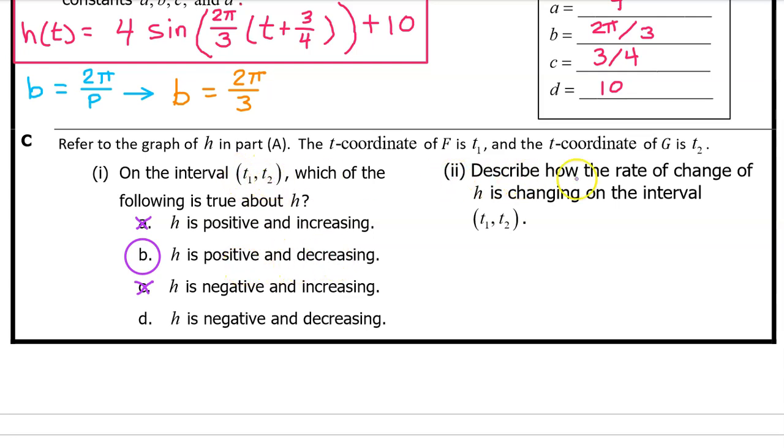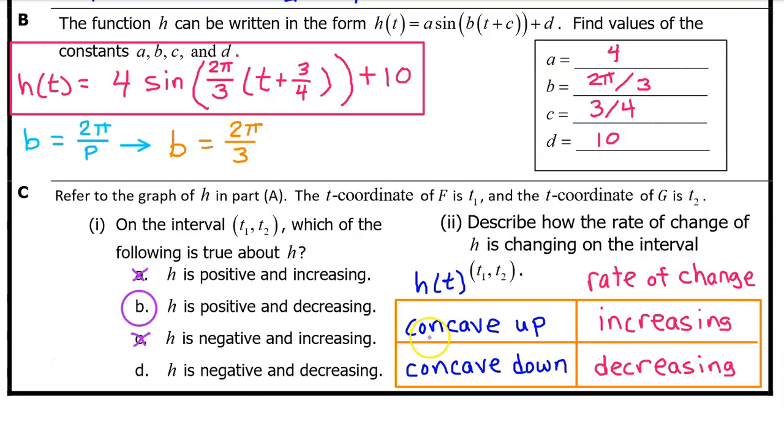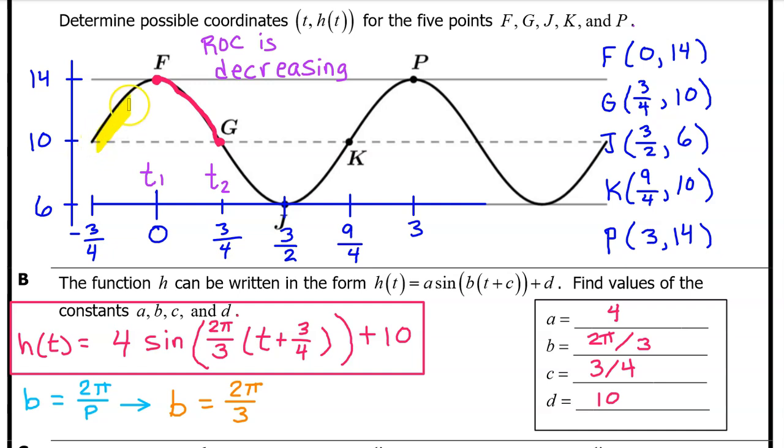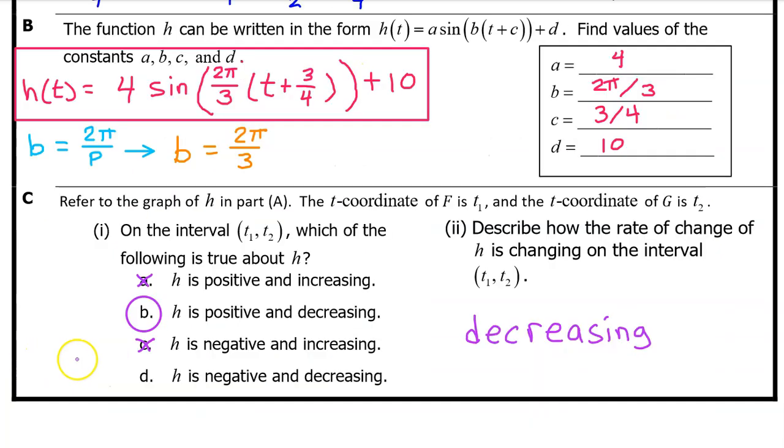See part 2. Describe how the rate of change of h is changing on the interval from t1 to t2. In unit 1, we learned that wherever h of t is concave up, the rate of change is increasing. And wherever h of t is concave down, the rate of change is decreasing. On the interval from t1 to t2, h of t is concave down. Therefore, the rate of change is decreasing. Since they didn't ask us to explain our reasoning, it's actually safest to answer with a single word. Just say decreasing.